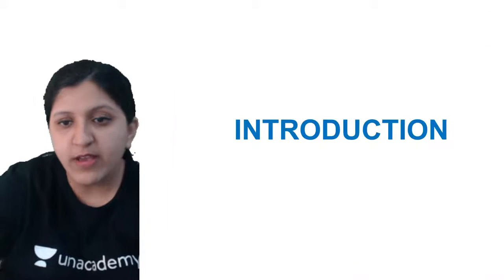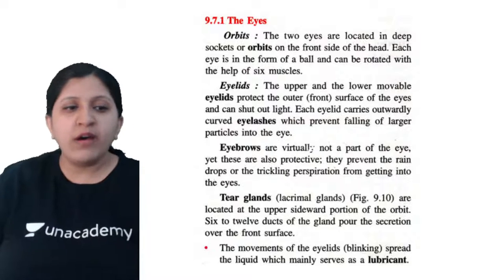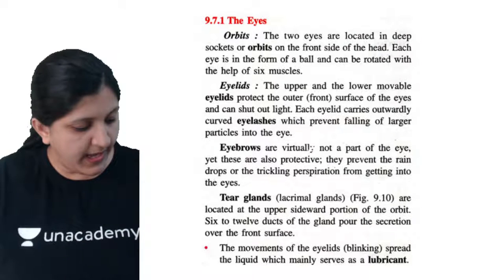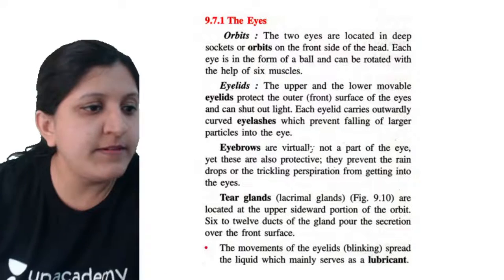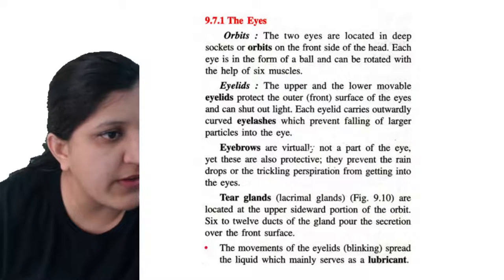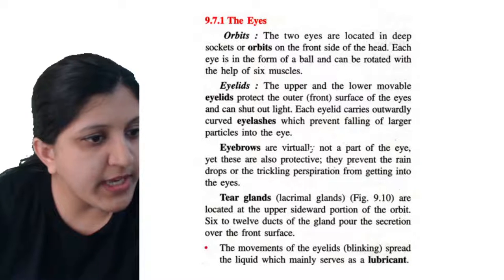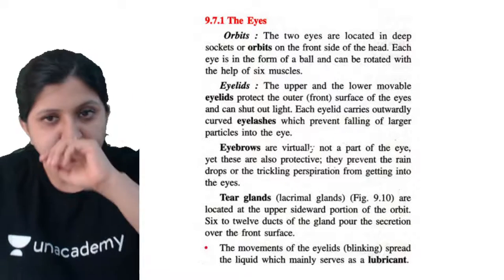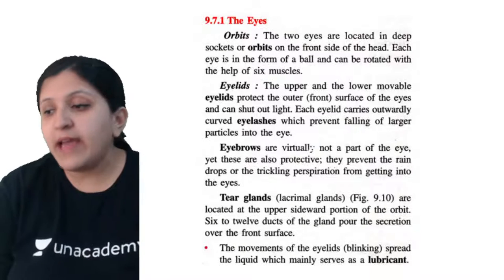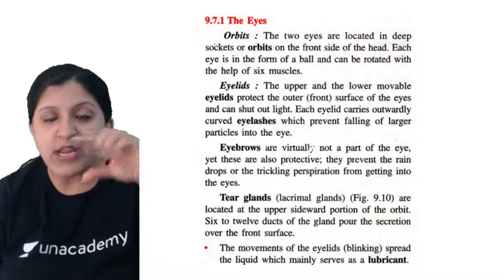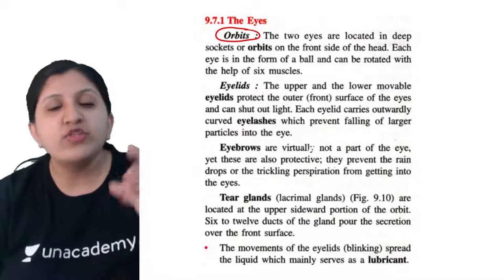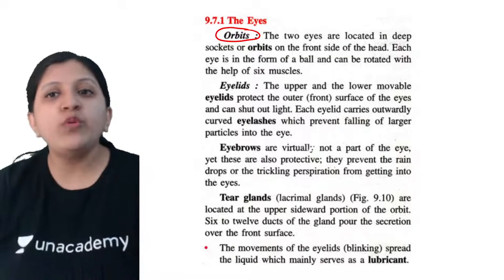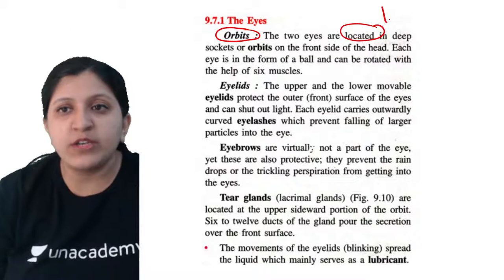Let's get started. Today's session we are going to discuss about the structure of the eye. The eyes are placed in the orbits - that is the bony orbit or bony socket. The two eyes are located there, and location is very important for your board examinations.